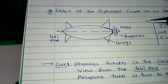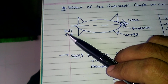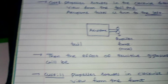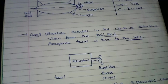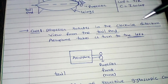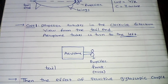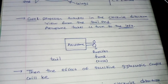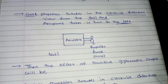This is the top view of an aeroplane. This part is known as the nose and this part is known as the tail end. In the example, 3 conditions are given. The first condition is propeller rotates in the clockwise direction, viewed from the tail end. An aeroplane takes a turn to the left. So 3 conditions are given related to propeller, viewing side, and aeroplane turn either right or left.